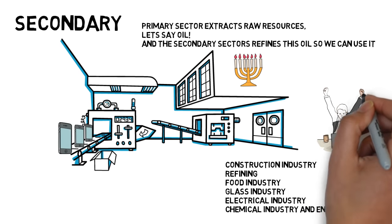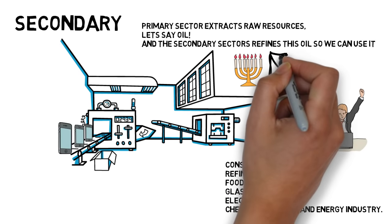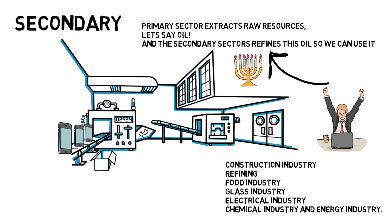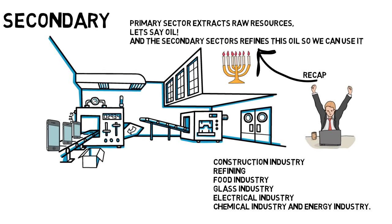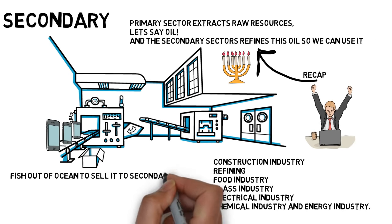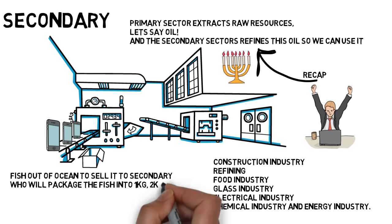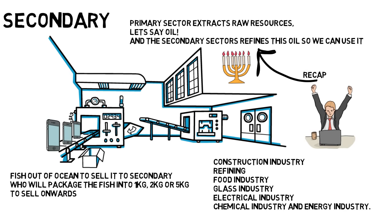In simple words, the Primary sector extracts raw resources — for example, oil — and the Secondary sector refines this oil so we can use it for different purposes, such as petrol or diesel. Another example would be fishing: the Primary sector brings fish out of the ocean and sells it to Secondary businesses, who package the fish into 1kg, 2kg, or 5kg to sell onwards to the customer or another business.